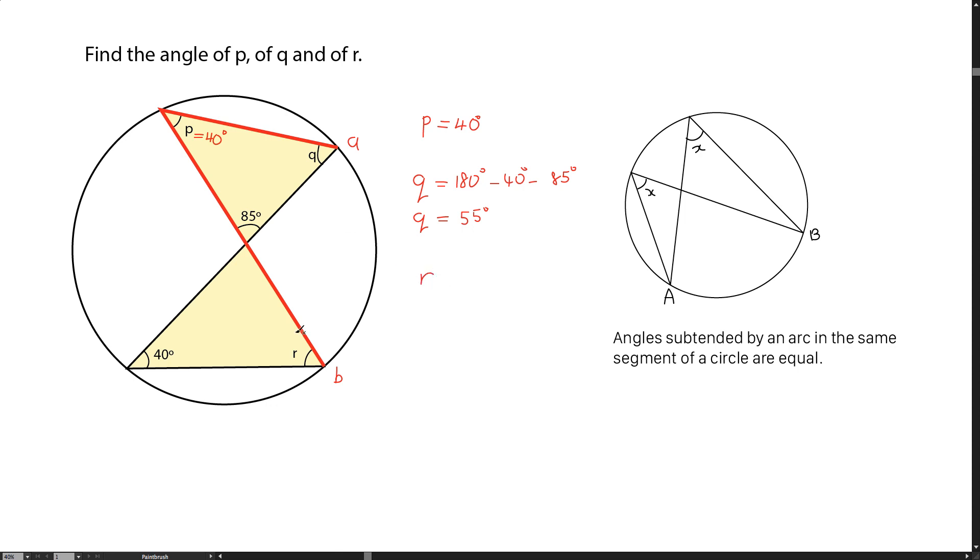Angle R is the same as angle Q, which is 55 degrees. The reason is it's subtended from R, C, and D that are labeled here.